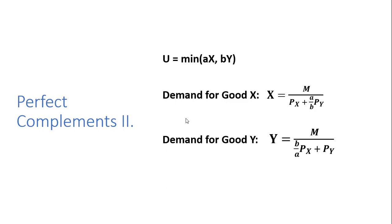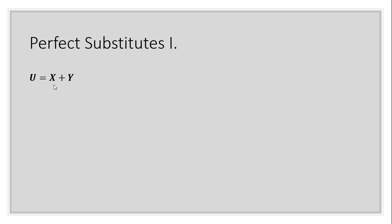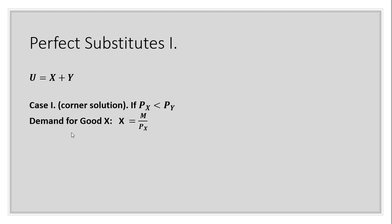You could use this as a reference to check your results if you're doing some homework or problems. Moving on to perfect substitutes: utility equals x plus y, units of good x plus units of good y. Case one is a corner solution. If the price of good x is less than the price of good y, the consumer will spend all of his or her income on good x. The demand for good x will be income divided by the price of good x, and the demand for good y will be zero.